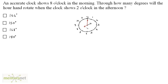So how many hours have passed since 8 o'clock in the morning? 1, 2, 3, 4, 5 and 6 hours have passed. So we need to calculate how much the hour hand moves when it travels 6 hours.